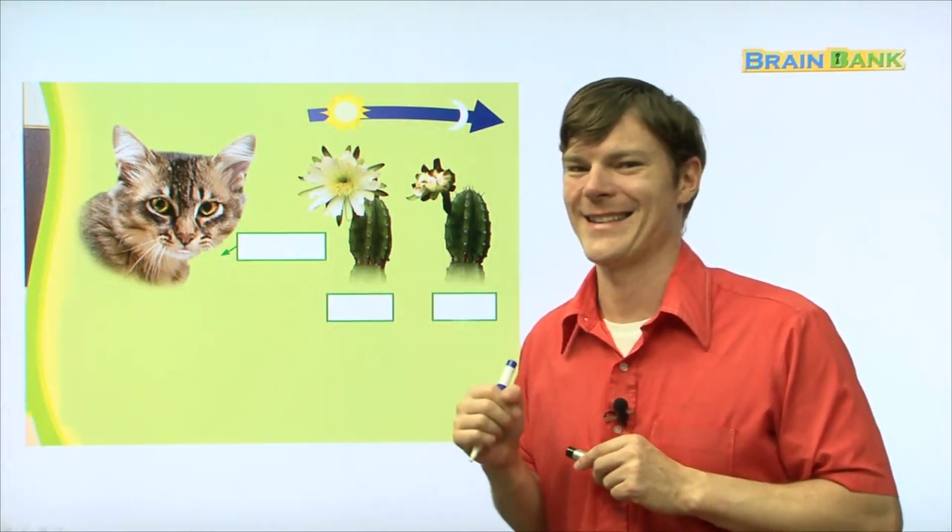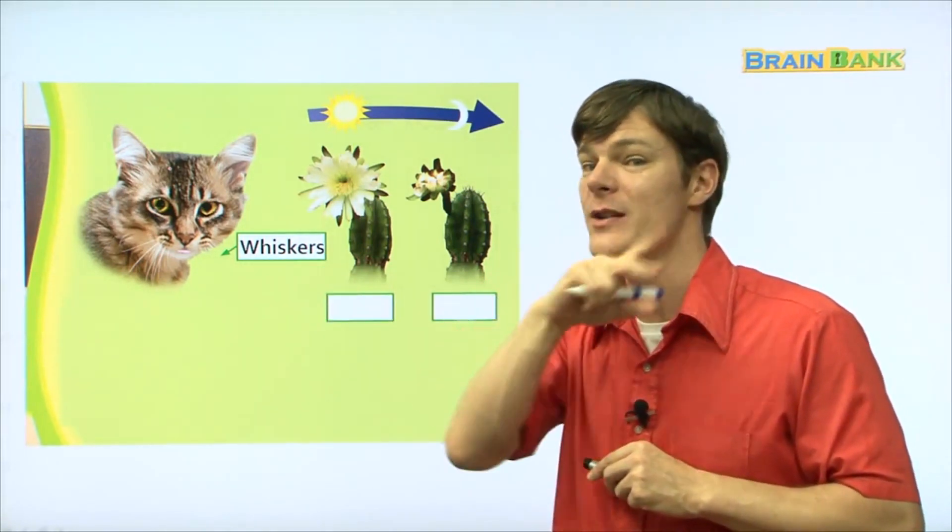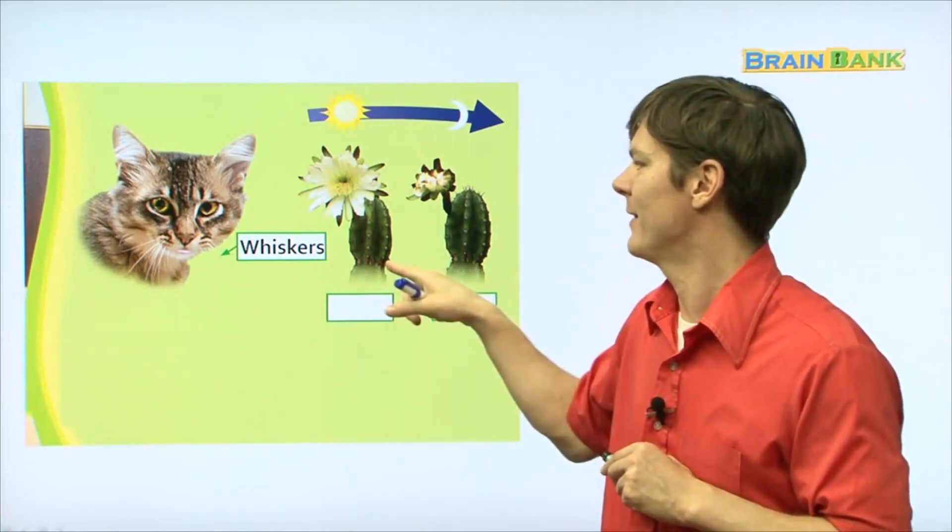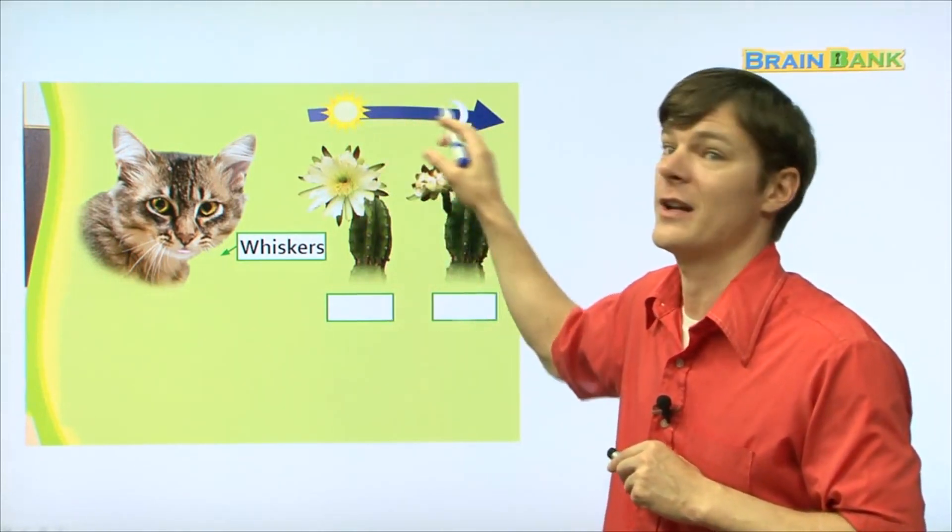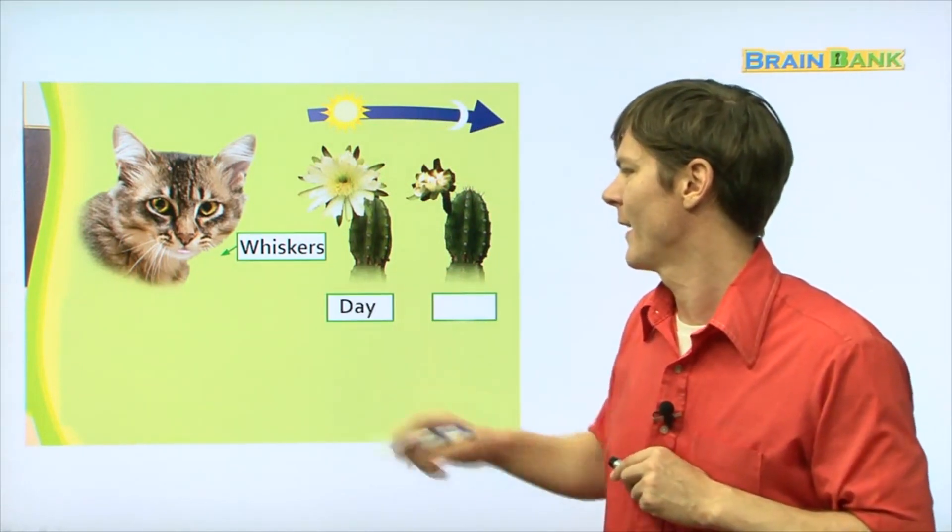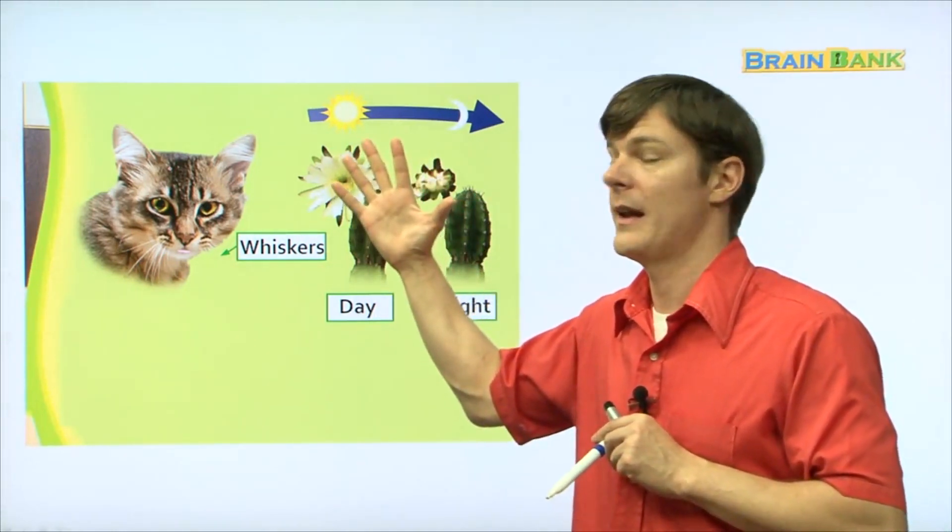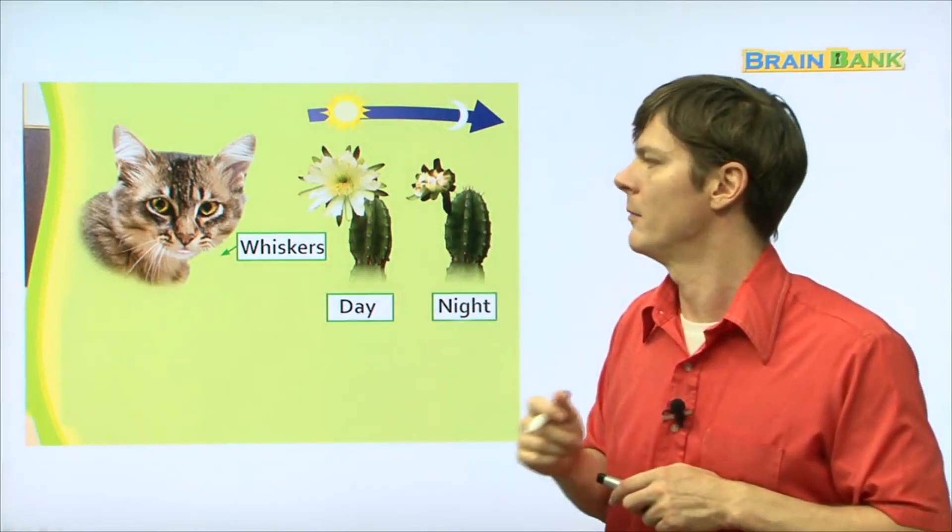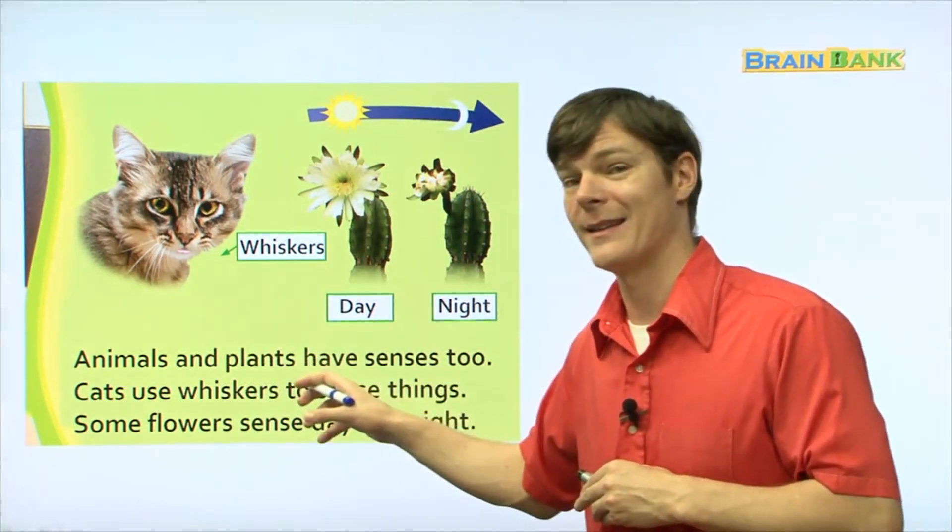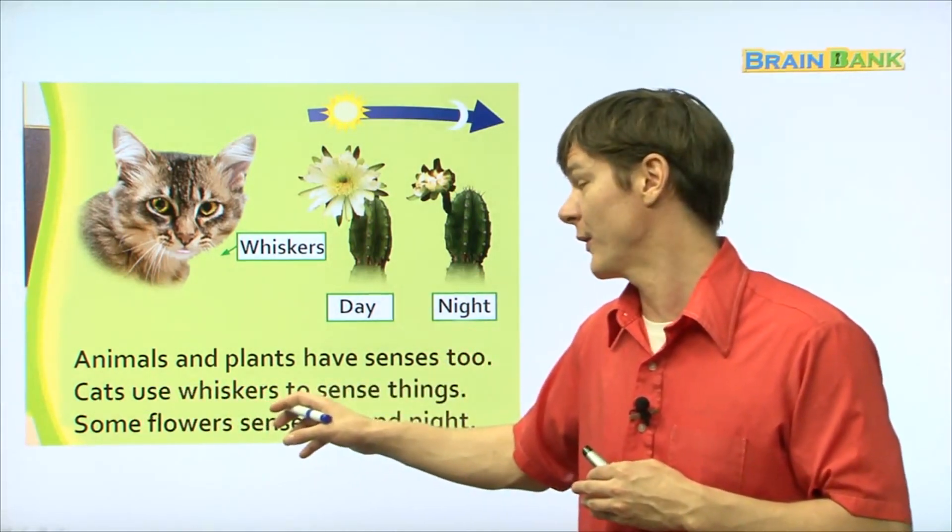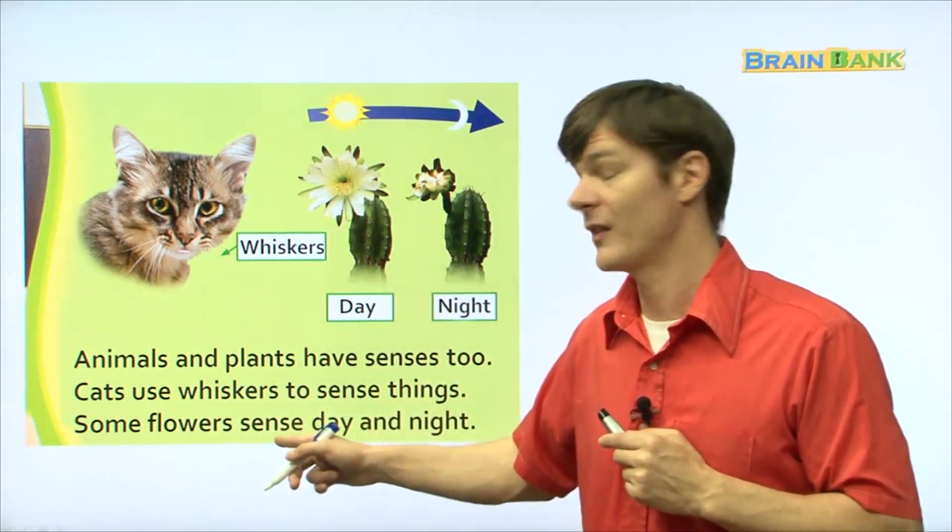So here you can see some animals and some plants. This animal is what? A cat. Koyangi. He's so cute and he uses his whiskers to feel around him. And then this is a cactus and here you can see the sun turning into the moon. Well, not turning into but the day becoming night. This is day and this is night. So in the daytime the flowers open and at night it starts to close. Animals and plants have senses too. Repeat with me. Animals and plants have senses too. Cats use whiskers to sense things. Cats use whiskers to sense things. Some flowers sense day and night. Some flowers sense day and night.